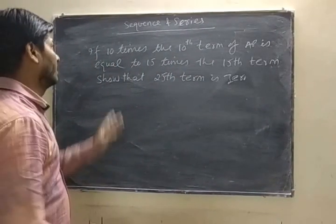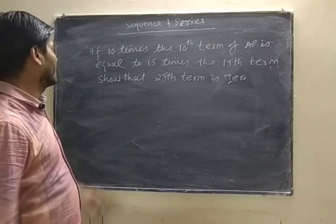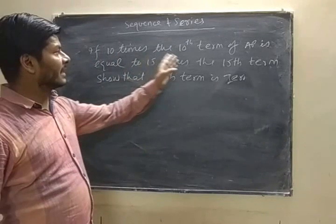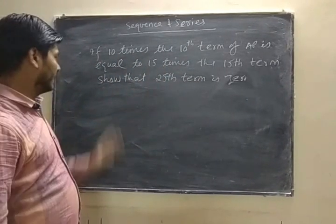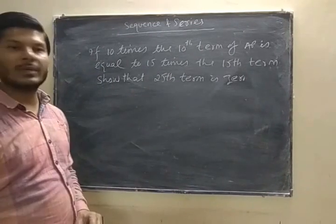Hello friends, if 10 times the 10th term of the AP is equal to 15 times the 15th term, then show that 25th term is 0.